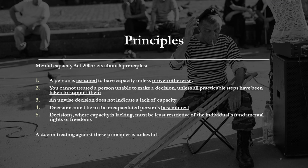There are five main principles, as defined by the Act, which a doctor is required to follow by law. Firstly, a patient has presumed capacity unless proven otherwise. A patient unable to make a decision cannot receive treatment unless all practical steps have been taken to support them in their decision. Just because a patient makes an unwise decision in the doctor's opinion, it doesn't mean that they lack capacity. Where a person lacks capacity, decisions must be made by the doctor in the patient's best interest. Where capacity is lacking, decisions made must be the least restrictive of the individual's fundamental rights or freedoms.